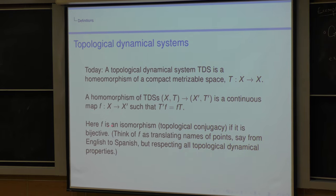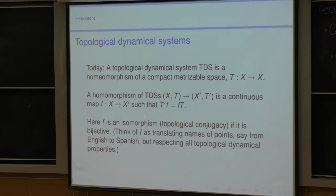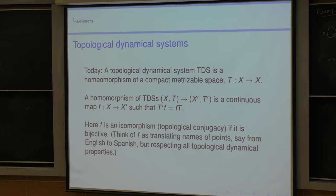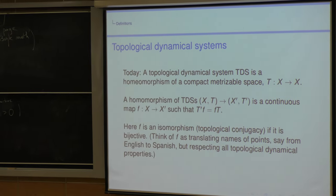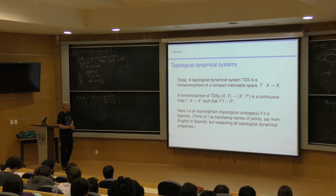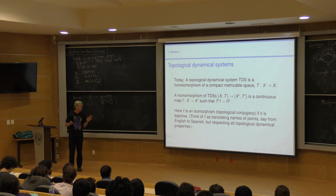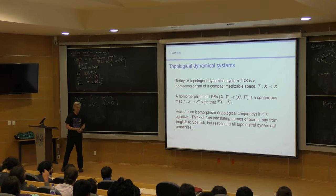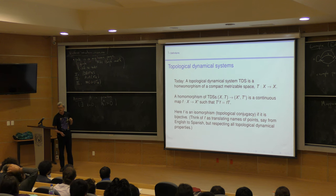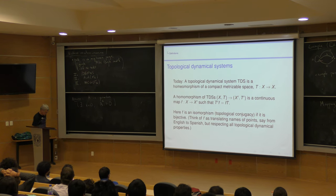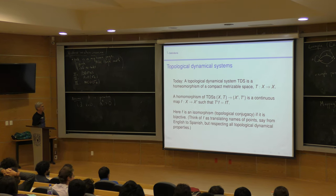A way to think about that is that f is an isomorphism — a topological conjugacy. One way to think about isomorphism is to think of one system as being in English and the other system in Spanish, and this isomorphism just translates from English to Spanish and you see the same thing. We are only interested in distinguishing systems up to isomorphism.